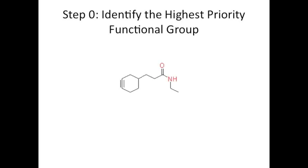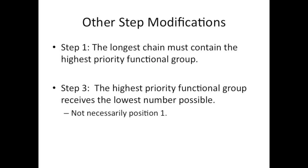In this example, it's the amide group. Once you've identified it, then move on to steps one to four. Step one is modified so that the longest chain must now contain the highest priority functional group. Step three is modified as well. The functional group gets the lowest possible number, no matter what.